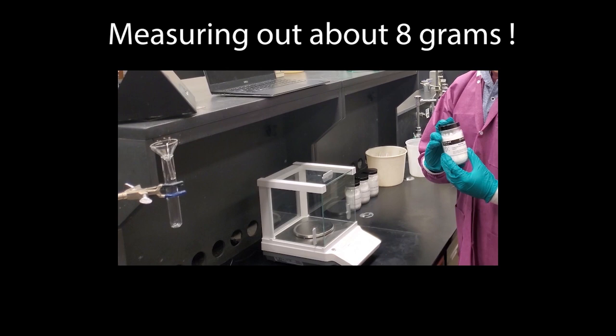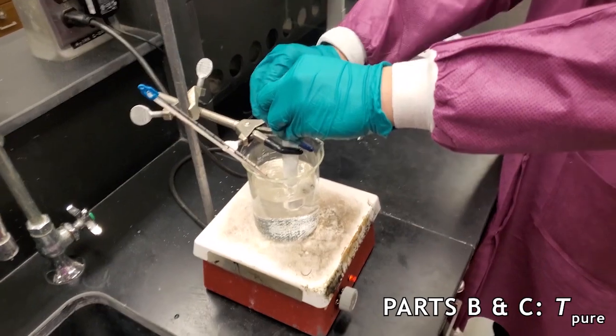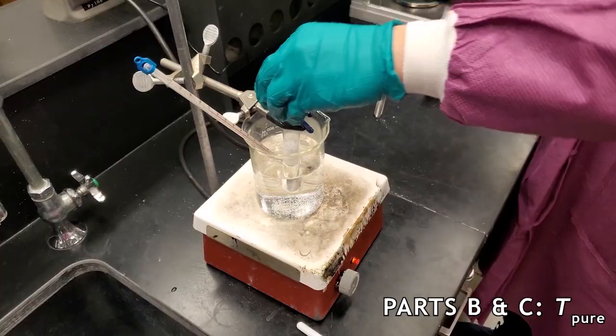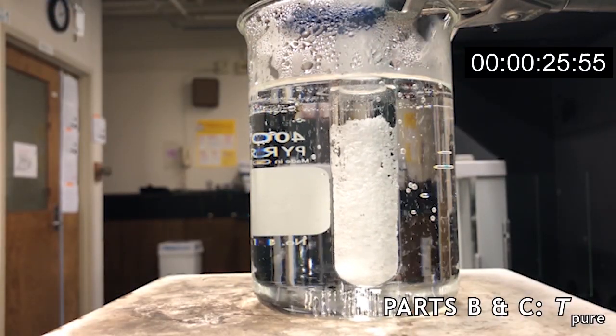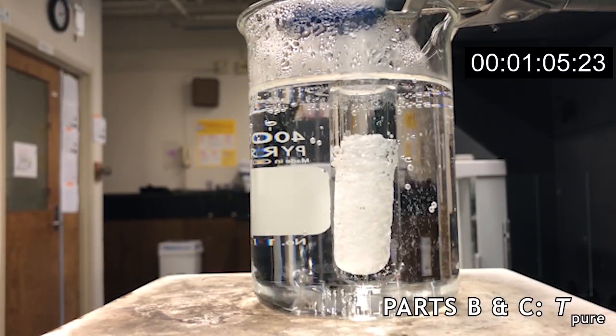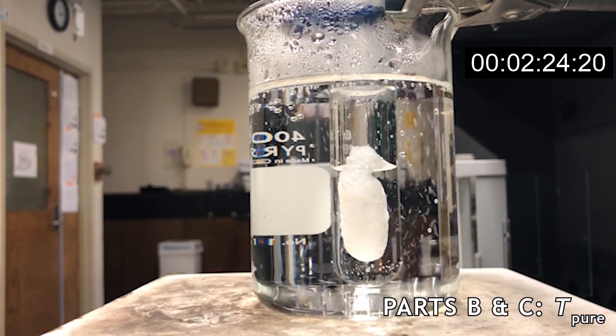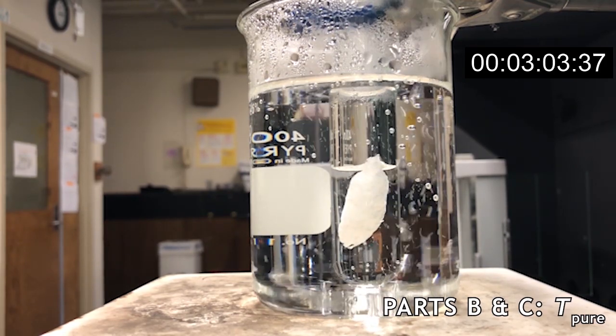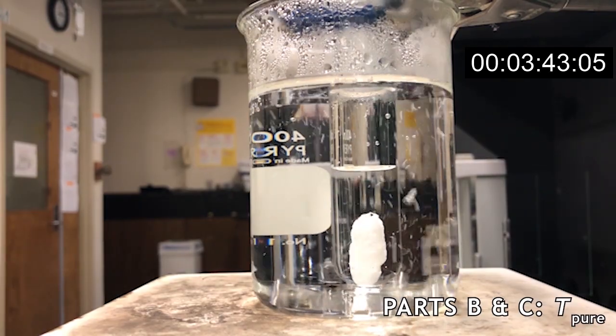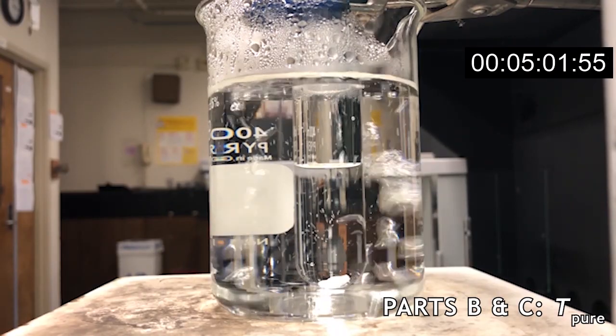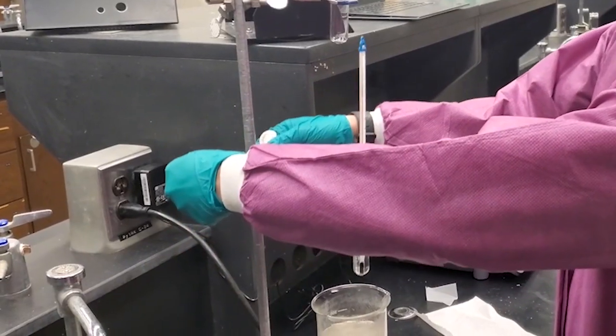Once the water is ready we can lower the test tube into the boiling water and melt the solution. We can add the thermometer in the test tube to ensure it was heated to the correct temperature.